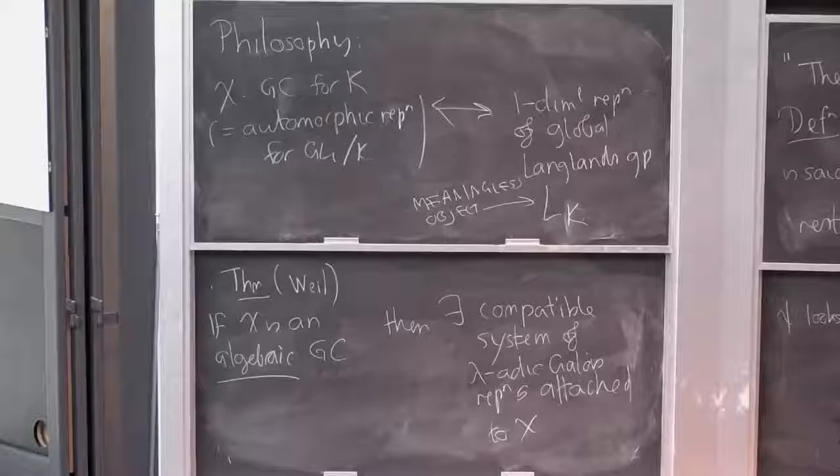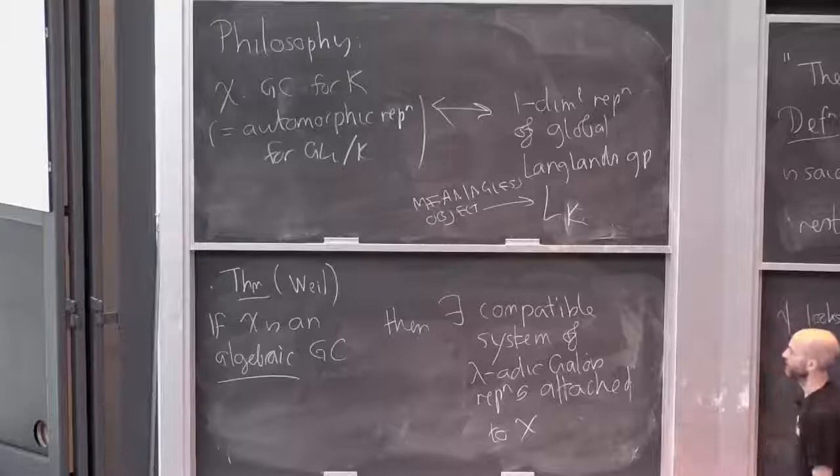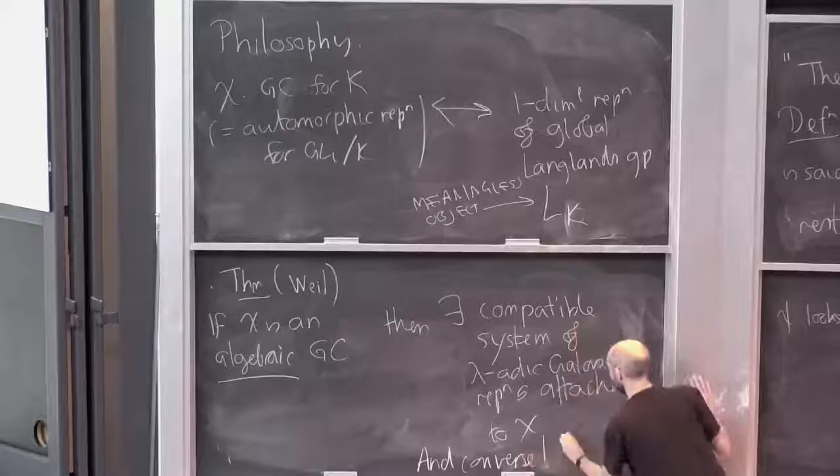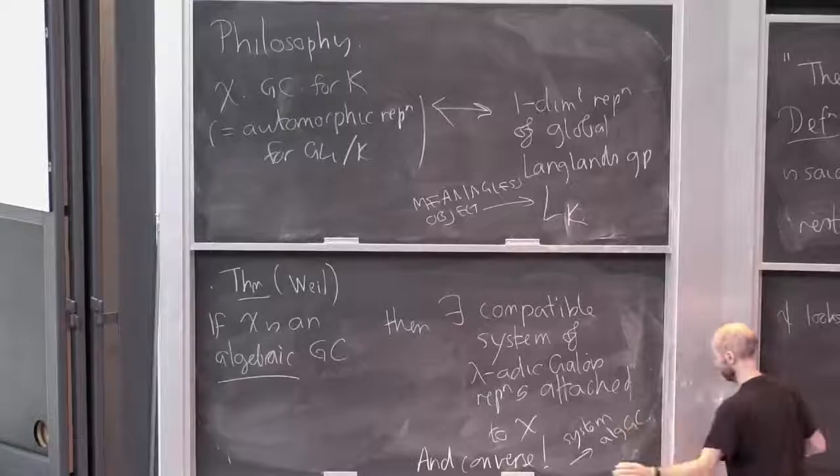The converse is true as well: given the compatible system, it gives rise to an algebraic Grössencharacter. I'm going to prove this. We did all that warm-up before.